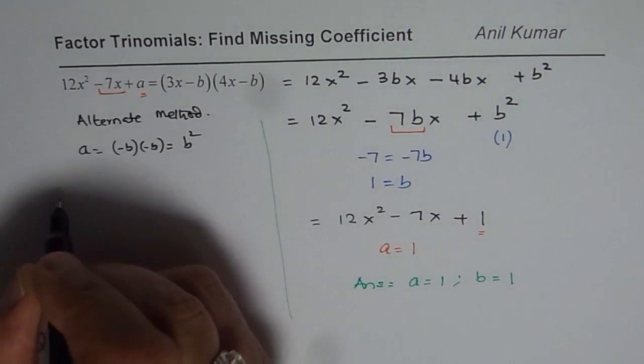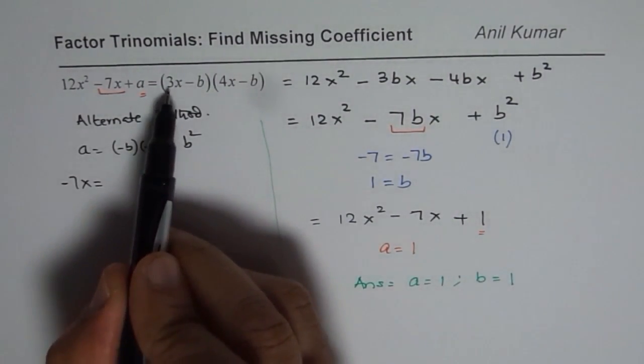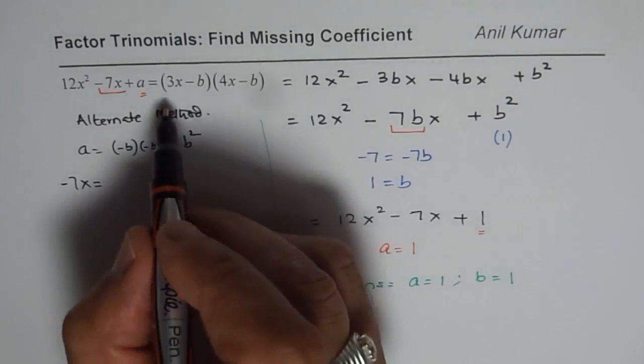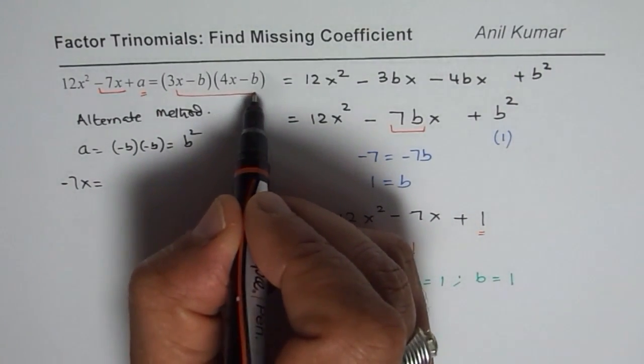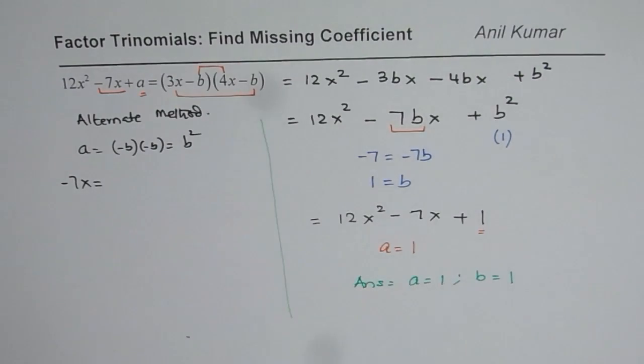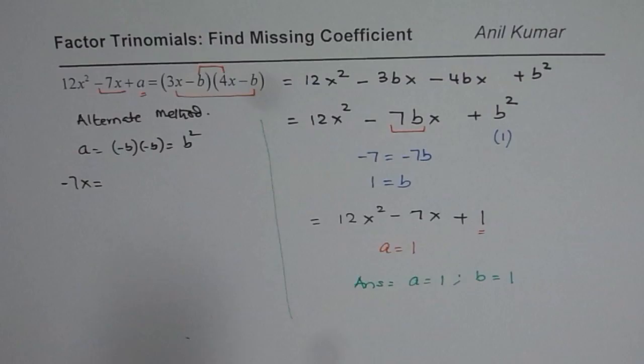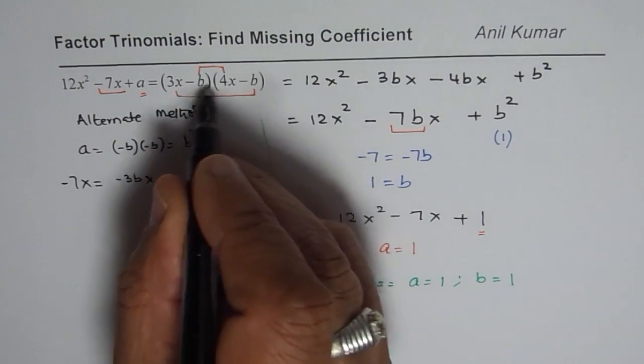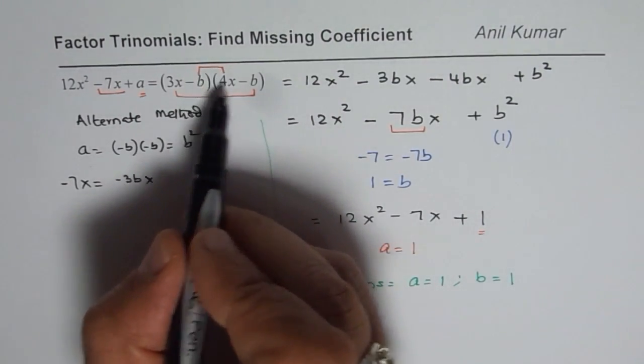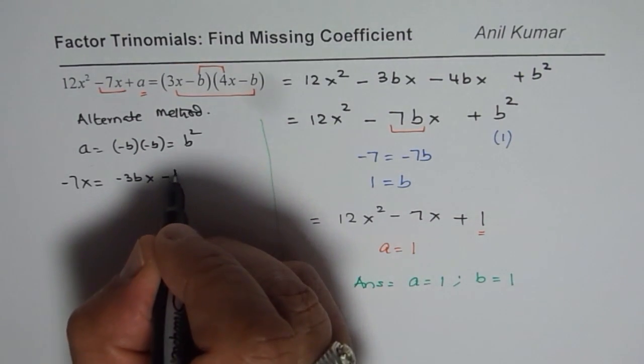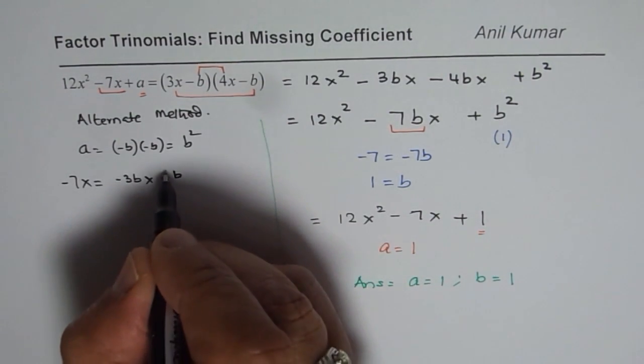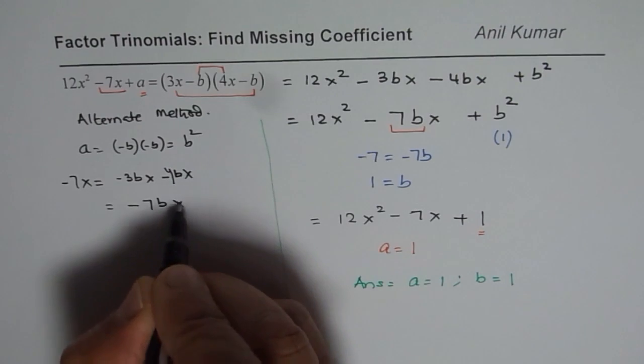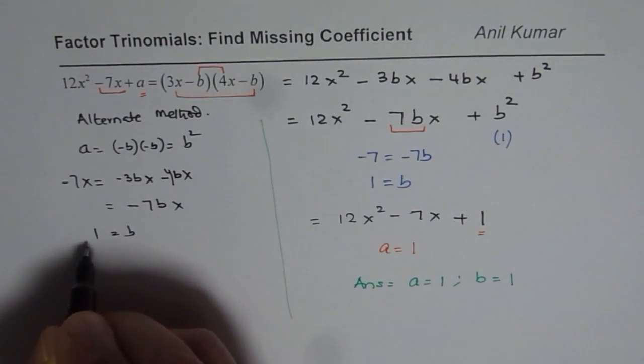And this minus 7x, you know, is actually addition of the terms, which are 3x times b and 4x times b. So addition of these two should be equals to minus 7x, so which is minus 3bx and minus 4bx. So what do you get here? You get minus 7bx. In comparing, you get b equals to 1.